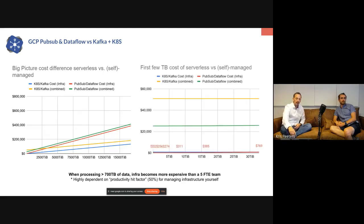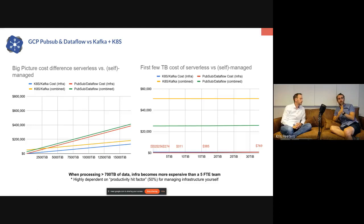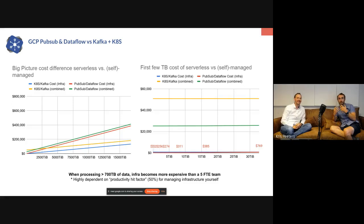If you look at this graph, the typical argument against serverless is that it gets expensive quickly and a Kubernetes and Kafka combination is cheaper. But if you look at the x-axis — terabytes — once you're processing 2,500 terabytes of data a month in a streaming fashion, then a five-person team's cost is actually outweighed by infrastructure. But honestly, who in this call is processing that much data? If you zoom in on the left side, PubSub and Dataflow infrastructure cost goes from zero to 30 terabytes, and 30 terabytes of business-critical event data is a lot of information.